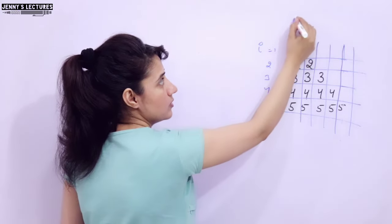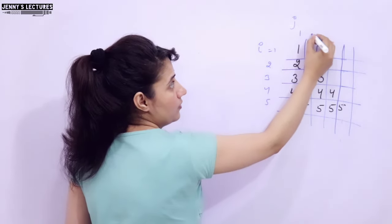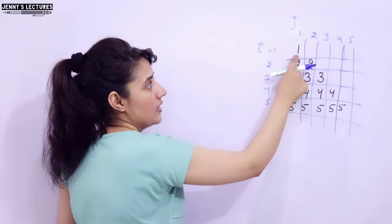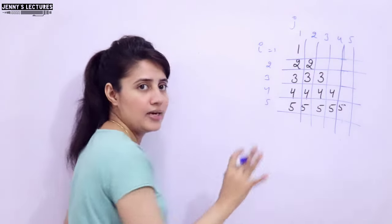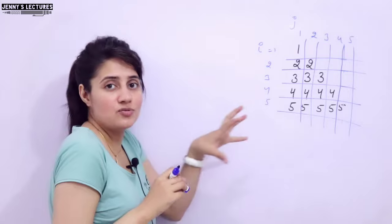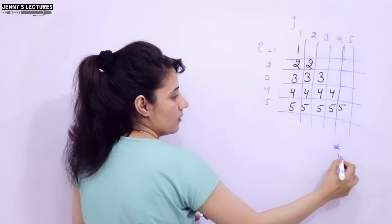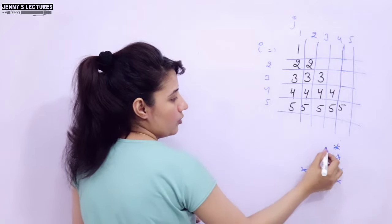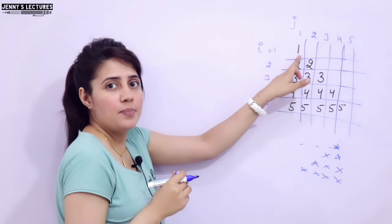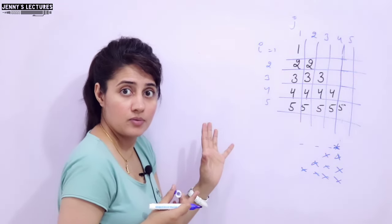We want 5 rows. Now for columns, j is responsible — the inner loop is responsible for printing the values in columns, like j value 1 for this one, then 2, then 3, then 4, then 5. Now here in this cell, we are printing 1 and here we are not printing space — we have to print space in a previous pattern because the star pattern had spaces before the star. But here, at the starting only I am printing 1, so no need to print space.